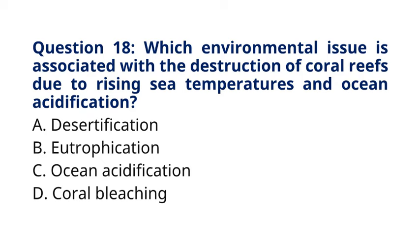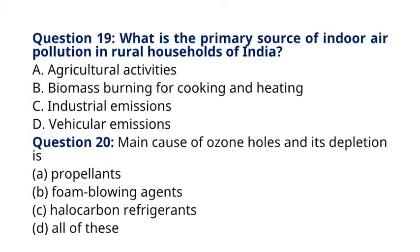Question 18. What is the primary source of indoor air pollution in rural households of India? A. Agricultural activities. B. Biomass burning for cooking and heating. C. Industrial emissions. D. Vehicular emissions. The correct answer to question 18 is option B. Biomass burning for cooking and heating. Explanation: in rural households of India, indoor air pollution is primarily caused by the burning of biomass fuels such as wood, crop residues, and dung for cooking and heating purposes, leading to respiratory diseases and health issues among residents.